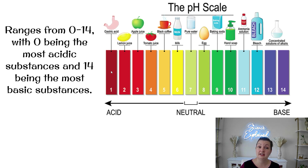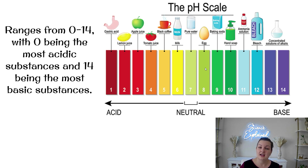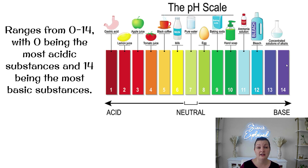A pH of one, which would be extremely acidic, is going to be like stomach acid. It gets weaker as it goes towards seven, which is neutral — and the example for neutral is water. A pH of six, like milk, is a very weak acid. On the other side of seven, eggs at pH eight are a very weak base. As you move farther and farther away from seven in either direction, the substance gets stronger. At 13 or 14, you have highly concentrated alkalis like oven cleaner.